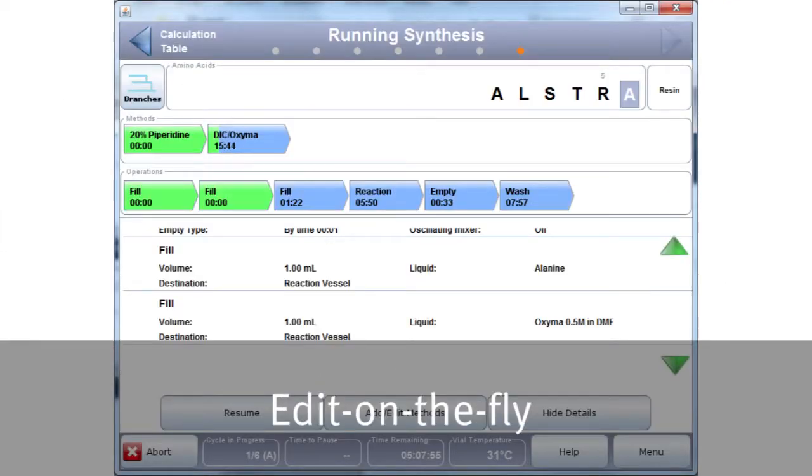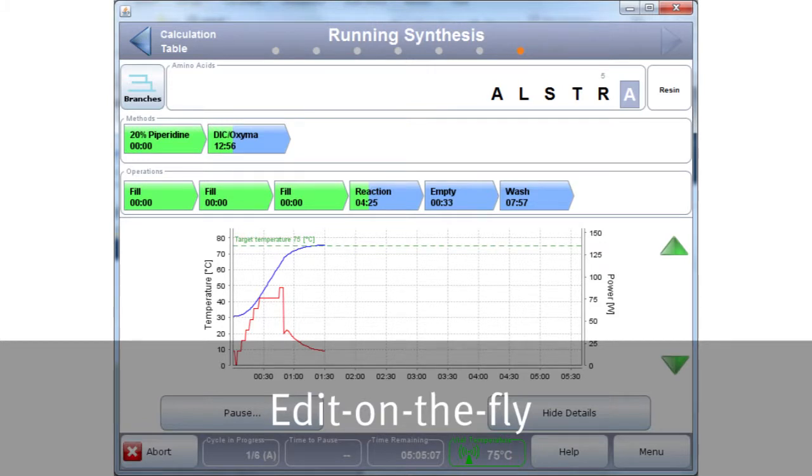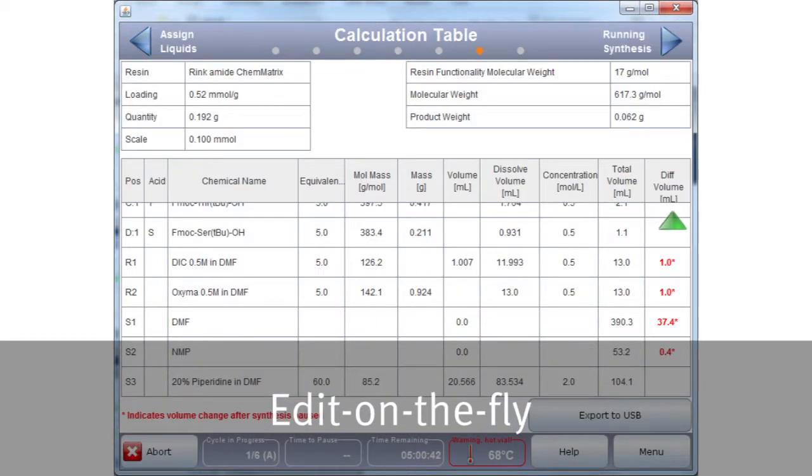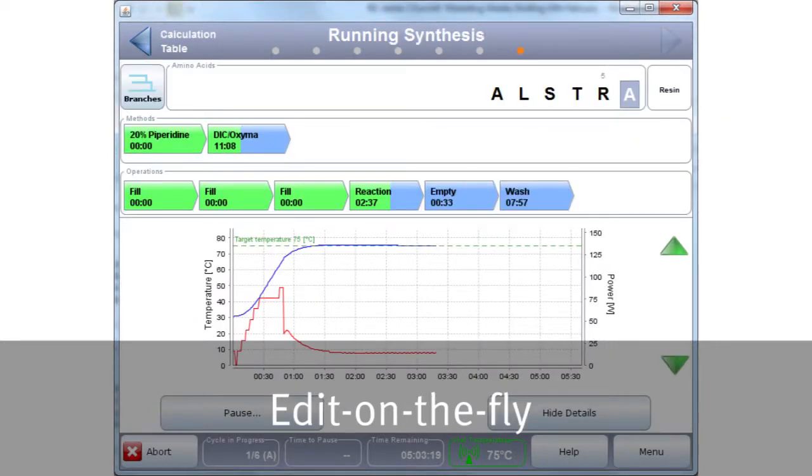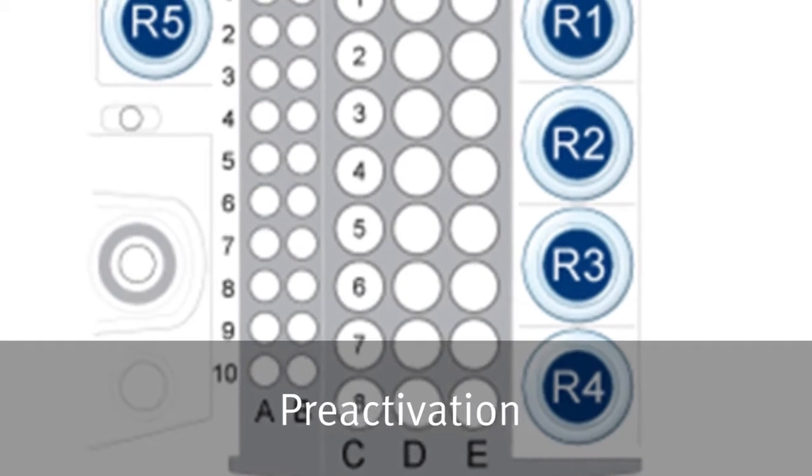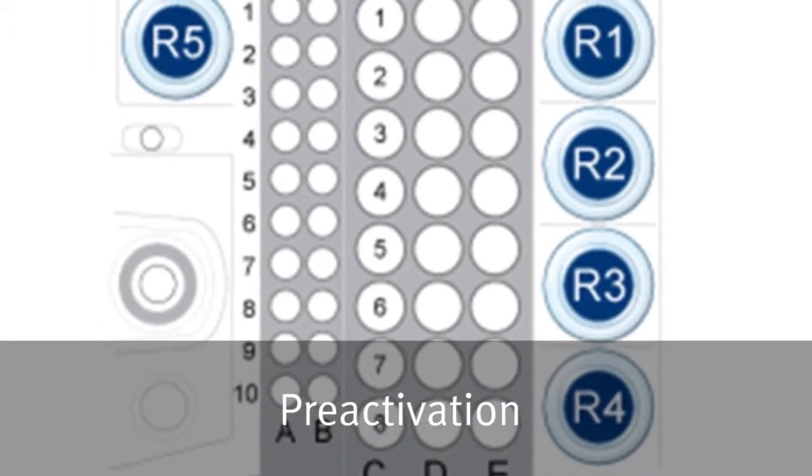The fully automated and semi-automated capability provides complete control over all reaction steps, allowing changes to be made quickly. Choose to activate the amino acid in situ or pre-activate any amino acid in a cycle.